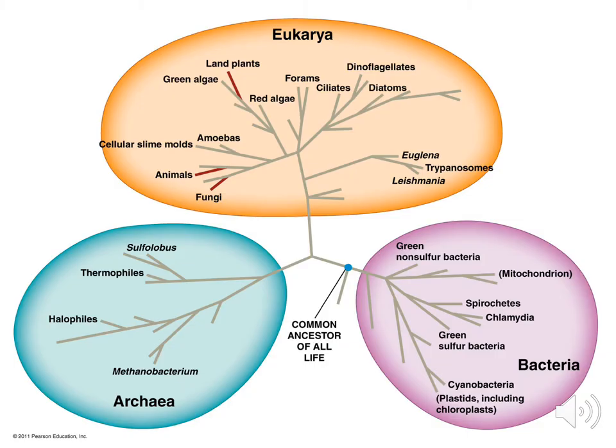All life on earth occurs in one of three main domains. All plants and algae fall in the domain Eukarya, or the eukaryotes, which means they have a nucleus in their cells.